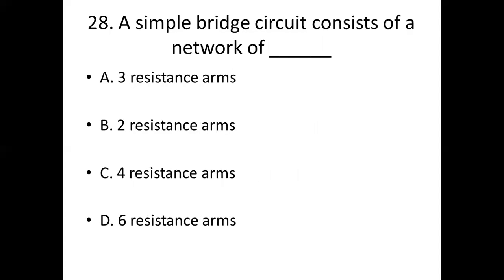Twenty-eighth one. A simple bridge circuit consists of a network of dash. Option A: three resistance arms. Option B: two resistance arms. Option C: four resistance arms. Option D: six resistance arms. Answer: Option C, four resistance arms.